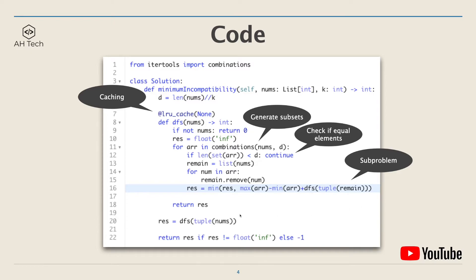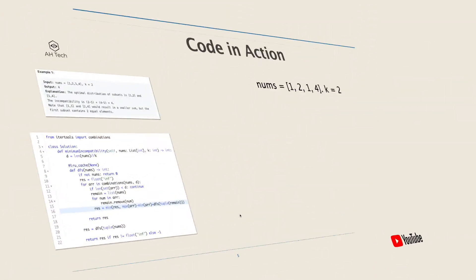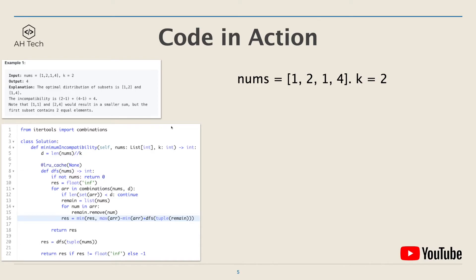Now let's see the code in action. Here we will be looking at example 1. The nums array is [1, 2, 1, 4] and k equals 2, so the size of each subset array is 2.